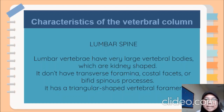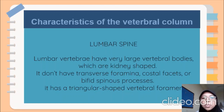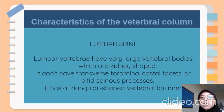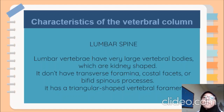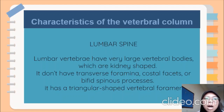Since they are the largest, the lumbar vertebrae are also the strongest in the vertebral column because the load of the body increases towards the inferior end of the column. They do not have transverse foramina, costal facets, or bifid spinous processes. They have a triangular-shaped vertebral foramen. The cartilage discs between inferior lumbar vertebrae are common sites for injury.